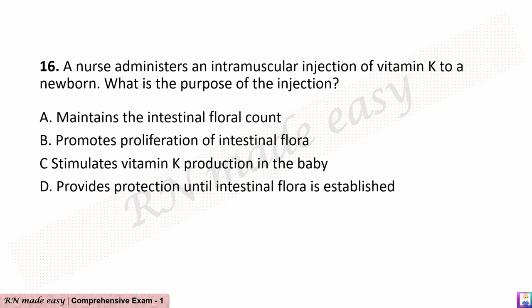Question 16. A nurse administers an intramuscular injection of vitamin K to a newborn. What is the purpose of the injection? A. Maintains the intestinal flora count. B. Promotes proliferation of intestinal flora. C. Stimulates vitamin K production in the baby. D. Provides protection until intestinal flora is established.